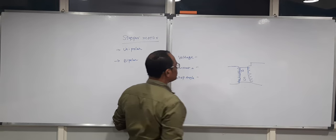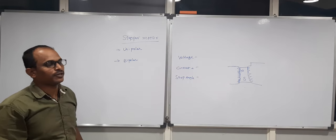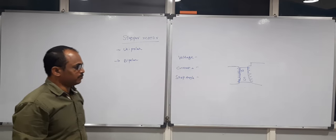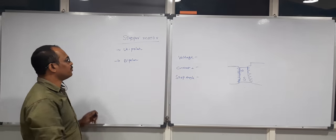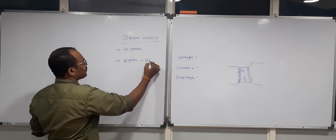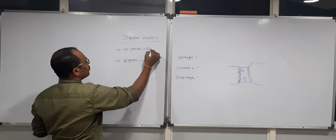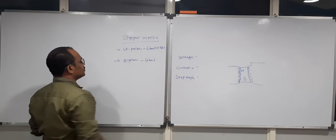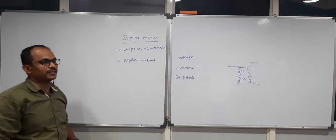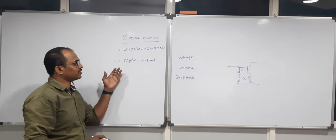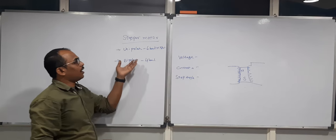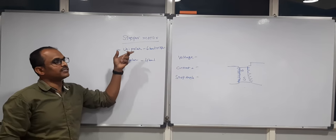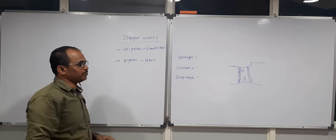The number of leads coming out determines the stepper motor type. Stepper motors are available with 4, 6, or 8 leads. A 4-lead stepper motor is treated as a bipolar stepper motor, and anything more than 4 leads — either 6 or 8 — is considered a unipolar stepper motor.